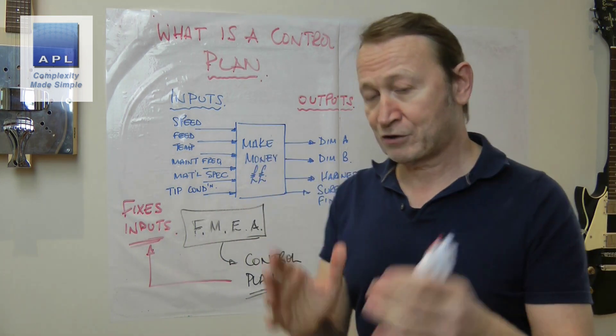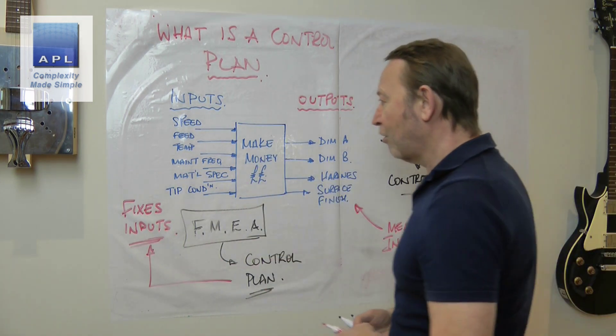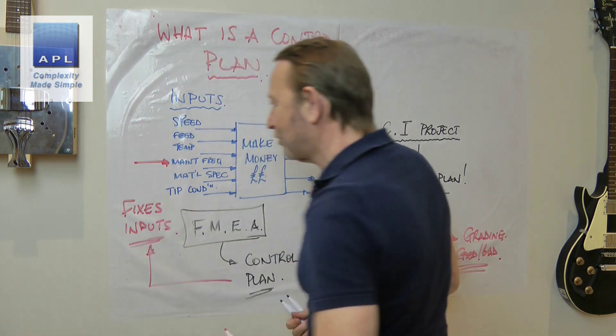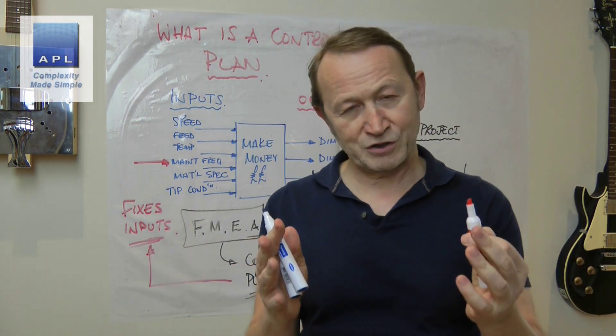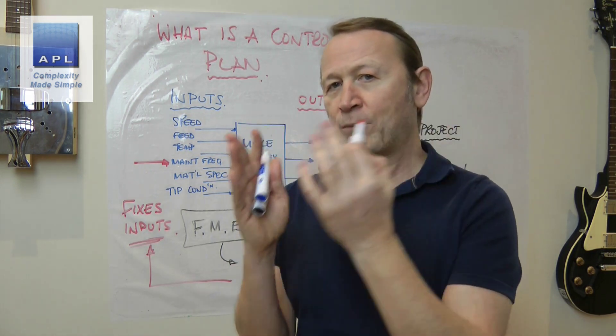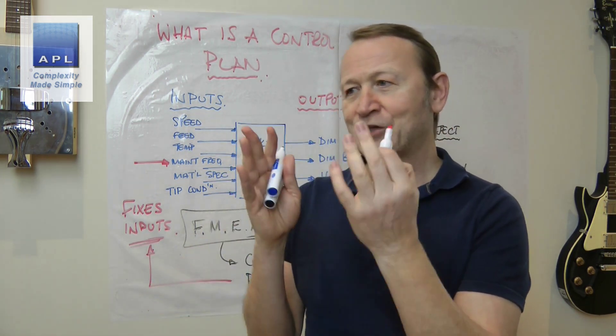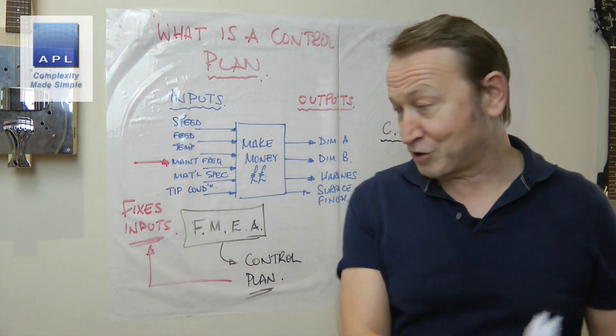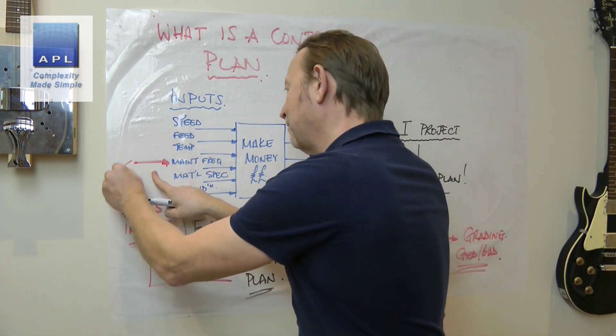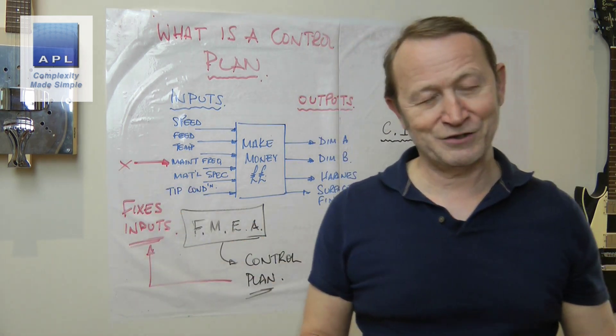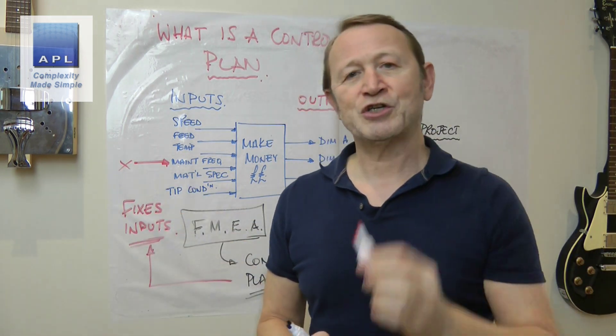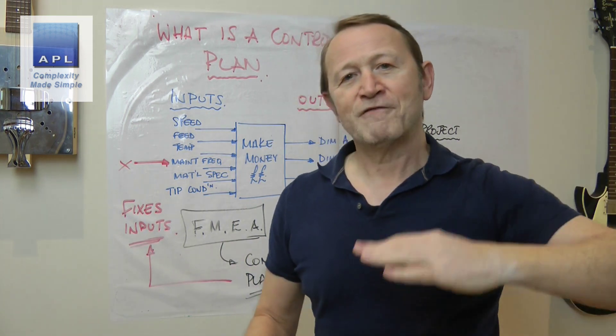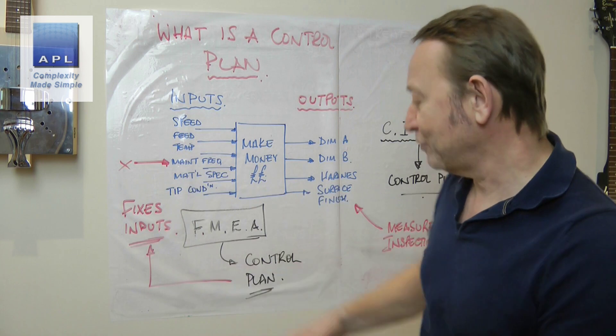That is an inspection plan, that is not a control plan. What control is, is making sure that your process always makes good product. I don't need to do this if I've got a great control plan. I don't actually need to measure any outputs.